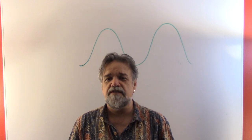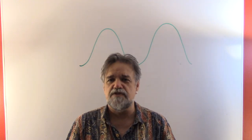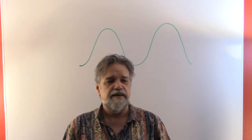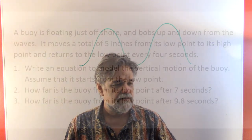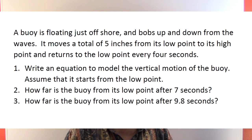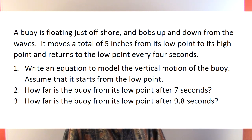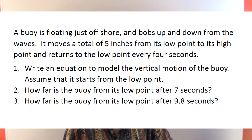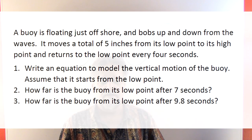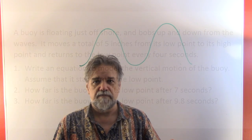Let's look at some applications. Here's the first one: a buoy is floating just offshore and it bobs up and down from the waves. It moves a total of five inches from its low point to its high point and returns to the low point every four seconds. We want to write an equation to model the vertical motion, assuming it starts from the low point, and find how far the buoy is from its low point after seven seconds and after 9.8 seconds.